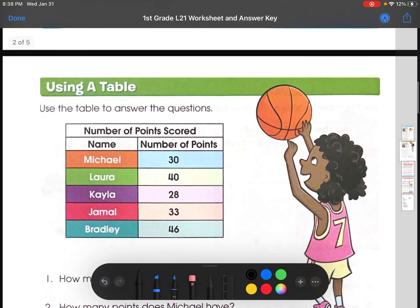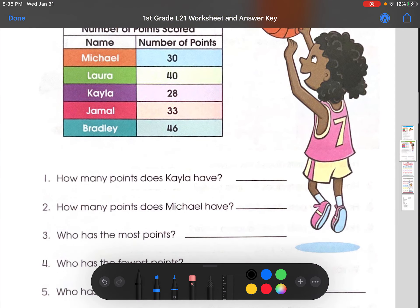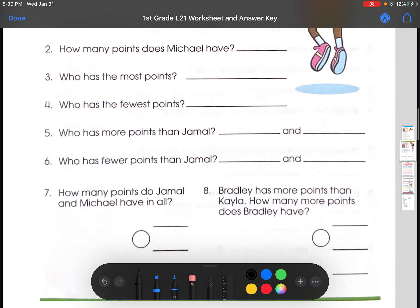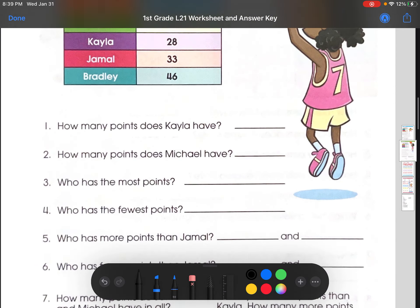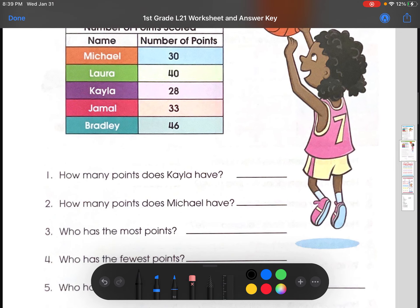Moving on to Kayla runs and then using the table. So, this is another table. Let's go straight into it. Let's do number one. How many points does Kayla have? So, if we go to the table, Kayla is right here. And if we go to this corresponding number, 28. So, Kayla has 28 points.